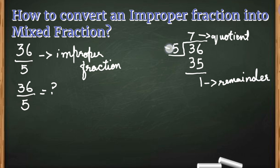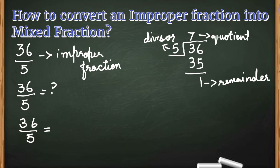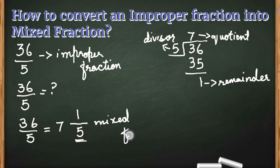7 fives are 35, and after subtracting, 1 remains. So here 7 is the quotient, 1 is the remainder, and 5 is the divisor. One important thing to know: when you convert an improper fraction into a mixed fraction, the denominator does not change. The whole number will be the quotient, the numerator will be the remainder, and the denominator remains the same. So 36 by 5 is equal to 7 and 1 by 5 as a mixed fraction.